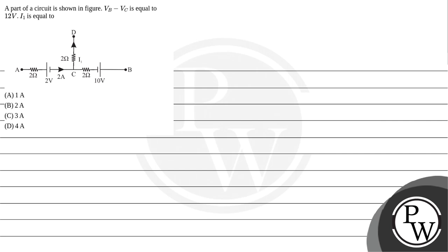Hello, let's read the question. A part of a circuit is shown in the figure. VB minus VC is equal to 12 volts.